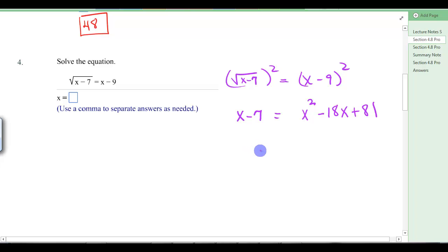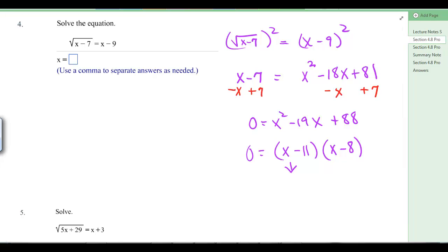Now we're going to get everything on one side. So we'll subtract x, we'll plus 7. So we have 0 equals x squared minus 19x plus 88. We're going to factor that. 11 and 8 give us 88. And 11 and 8 could give us 19. So we have x minus 11, x minus 8. And then we solve both of those. We get x equals 11, x equals 8.